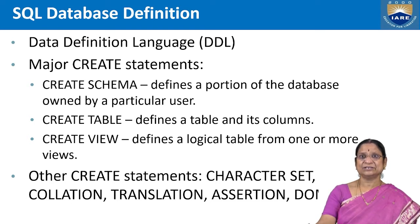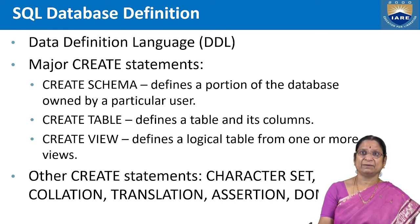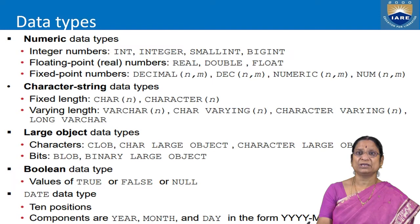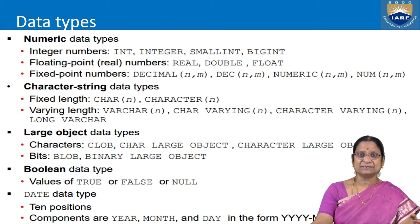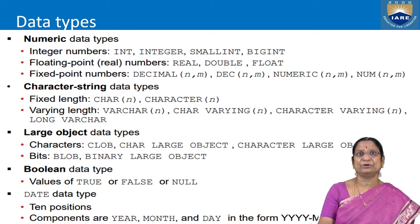Schema is a collection of objects and it defines the portion of the database owned by a particular user. Table defines a set of columns and rows. To create a table, we need columns — that is, attributes. Attributes require defining what types of data are to be stored. Various data types supported by SQL are: numeric data types, character or string data types, large object data types, boolean data types, and date data types.